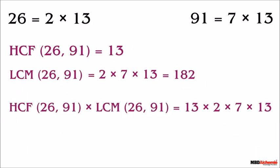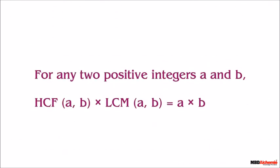Have you noticed? The product of HCF and LCM of 26 and 91 is 13 into 2 into 7 into 13, which is nothing but the product of 26 and 91. Thus, for any two positive integers a and b, the product of HCF and LCM of a and b is equal to the product of a and b.